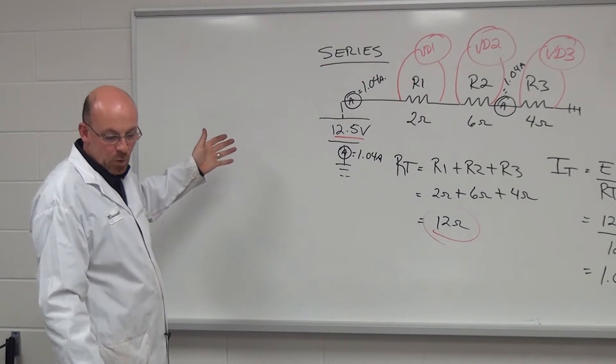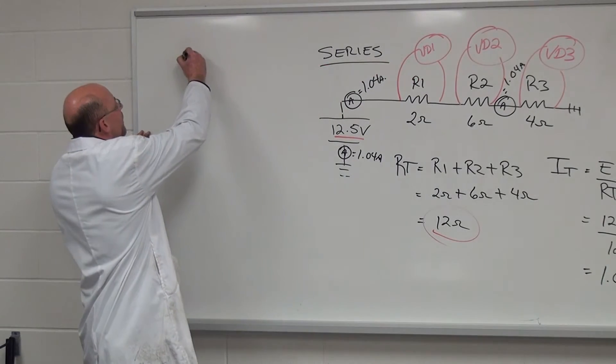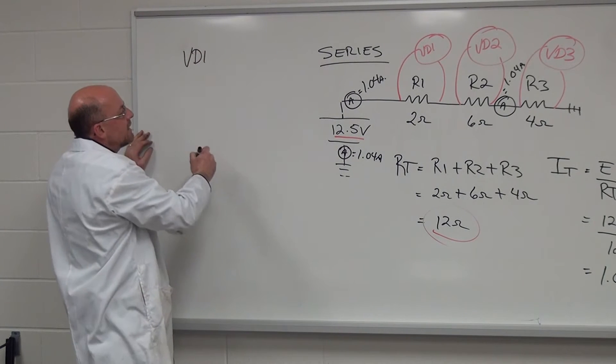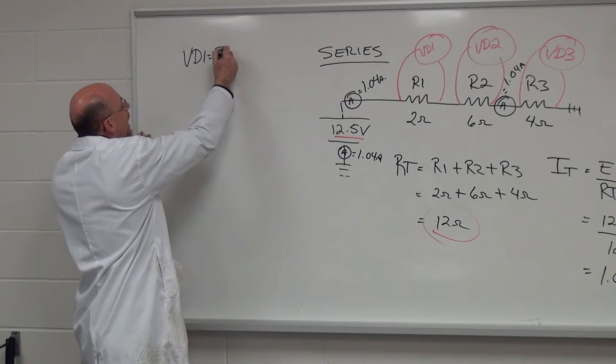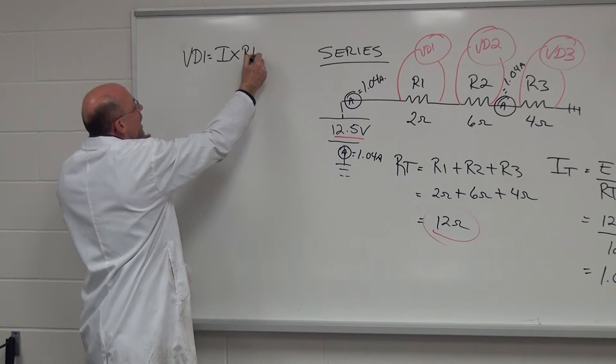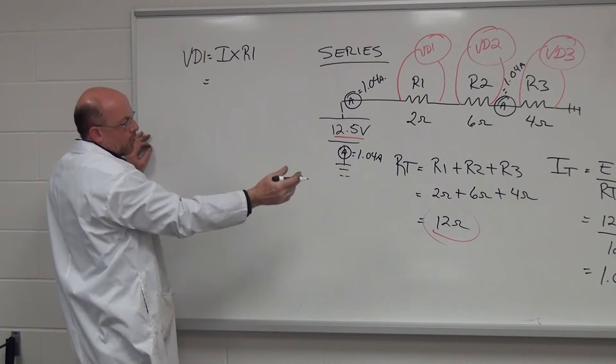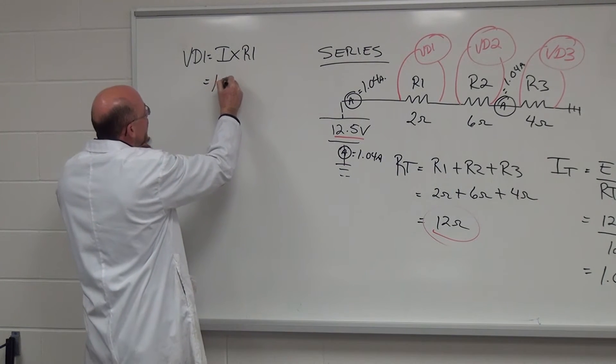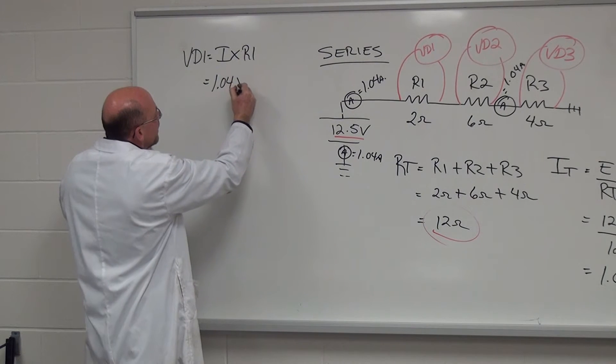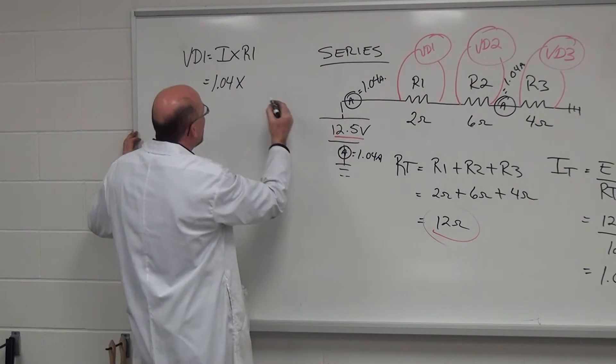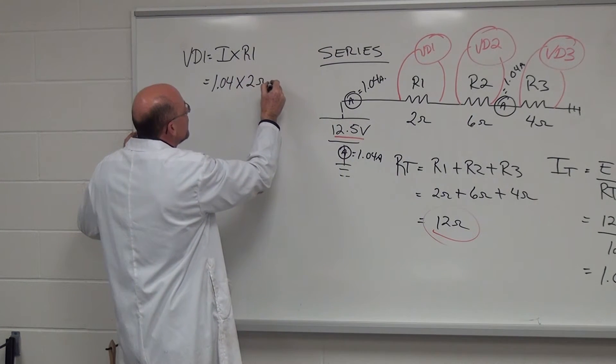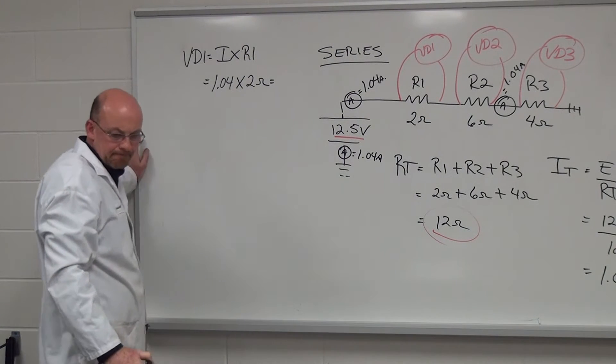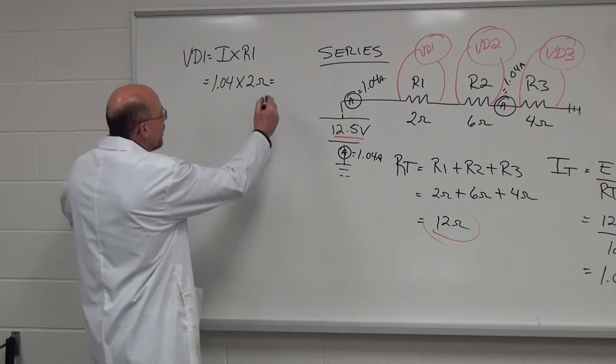So now carrying on with the voltage drops. So if we take a look at the voltage drop, VD1 equals I times R1. And if we follow through, we've already established that we have 1.04 amps times the resistance of R1, which is 2 ohms, which equals 2.08 volts.